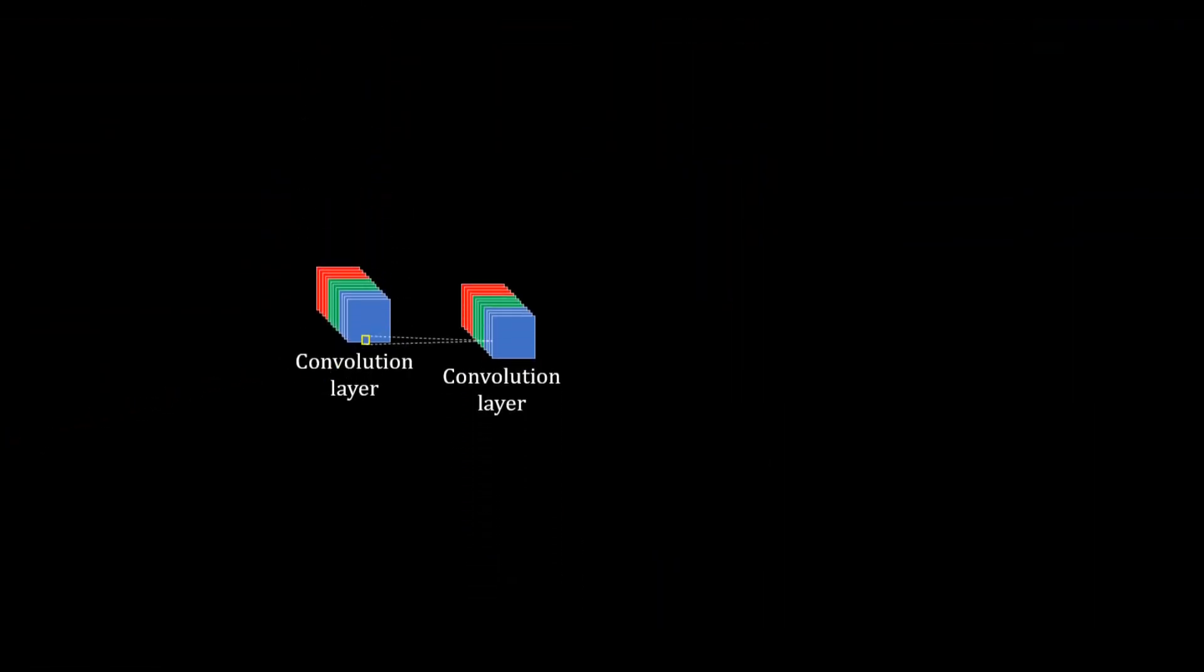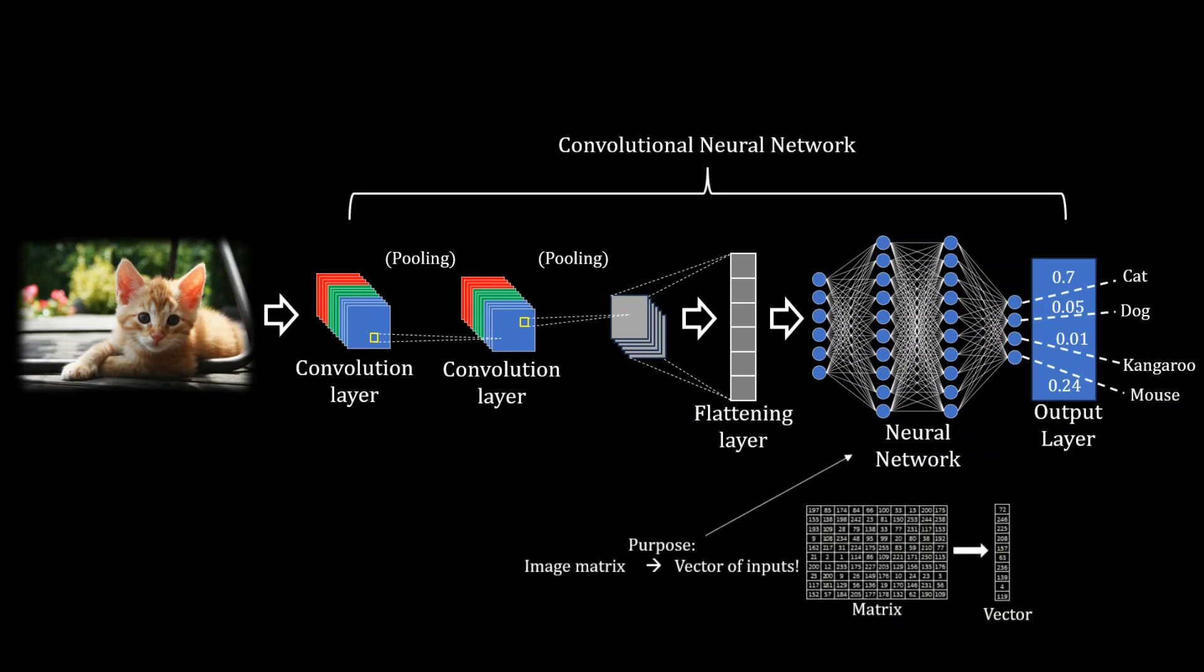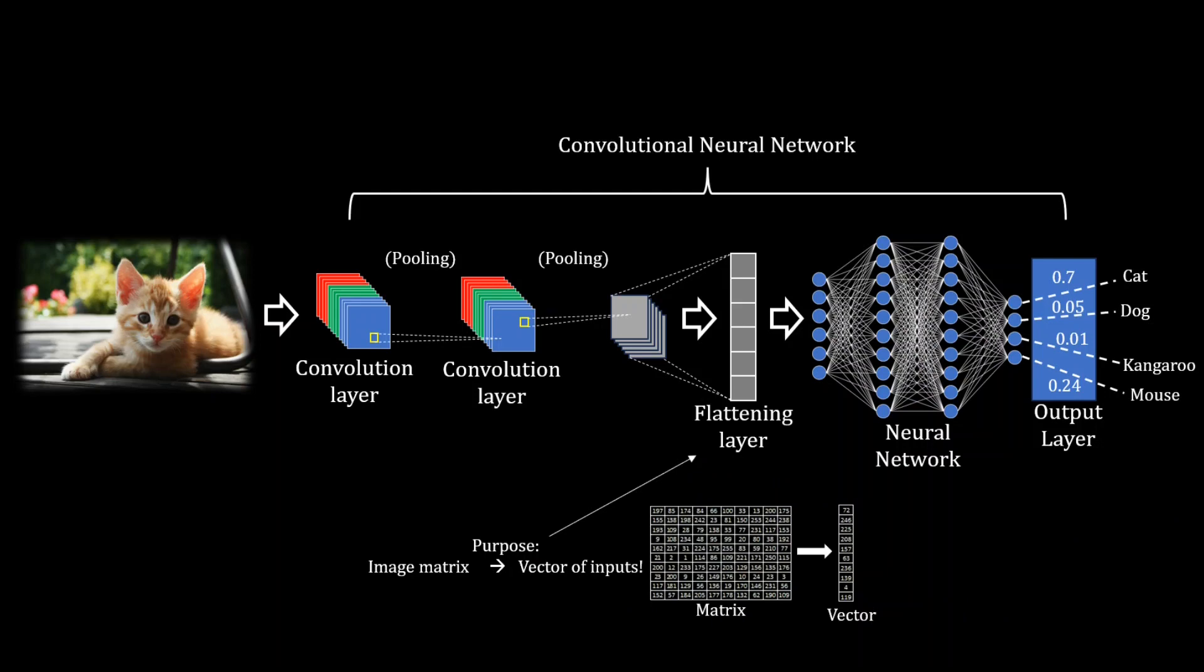One example is a convolution layer, giving rise to convolutional neural networks, which are good at analyzing arrays of numbers, like an image. This is a whole other video in itself, but the underlying principle is based on a scanning-like motion.